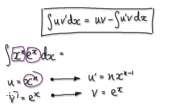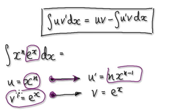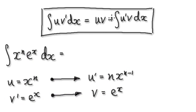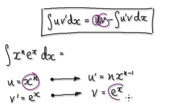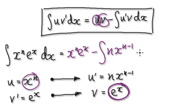Let u be x to the power of n, and let v prime be e to the x. So if u equals x to the n, then u prime would be n x to the n minus 1. Now if v prime equals e to the x, then v would be e to the x. So blindly following the formula: it's saying get u times v, so that would be x to the power of n times e to the x, and then take away the integral of u prime — which is n x to the n minus 1 — times v, which is e to the x.